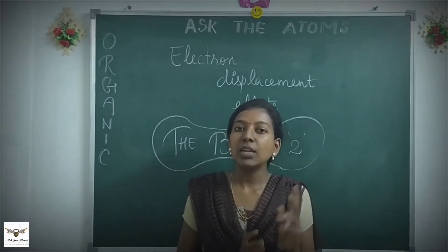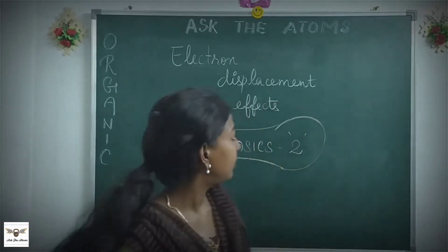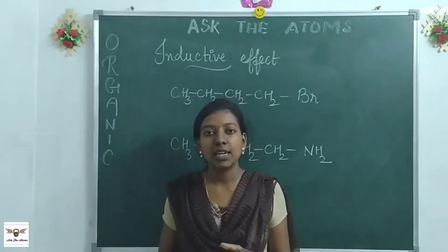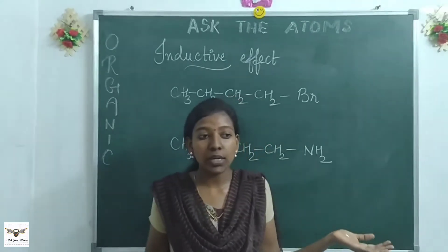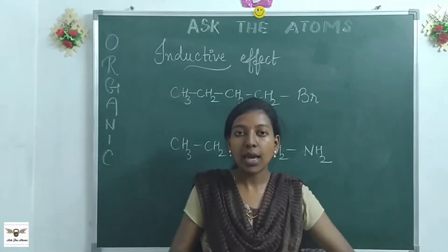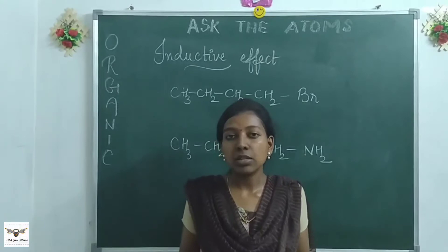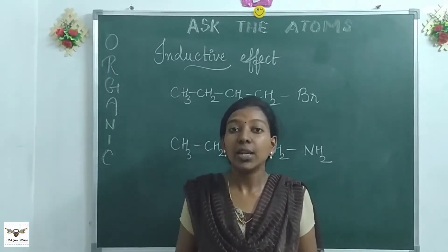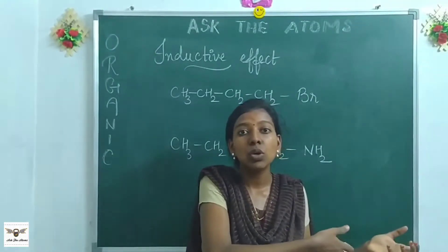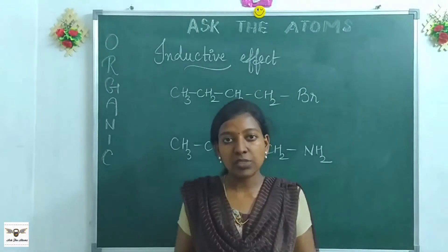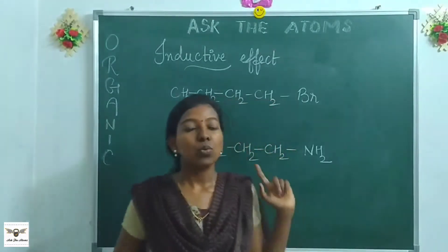Let's proceed to learning the electronic factors or electron displacement effects. The first one is the inductive effect. I can tell you in simple words: it's like a tug of war with electrons. It's like two people standing on either side holding a rope, and that rope represents all the electrons. The rope can be pulled towards one side or the other depending on the electronegativity of the atoms on either side.